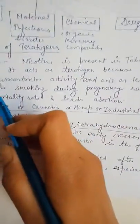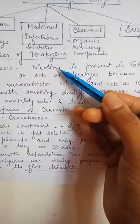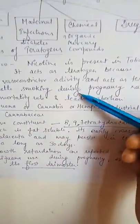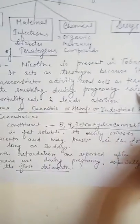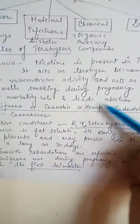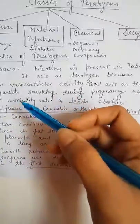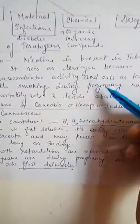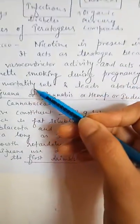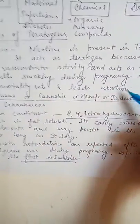Cigarettes contain tobacco in which nicotine is present. When we smoke cigarettes during pregnancy, it raises the mortality rate of the fetus and leads to abortion. Sometimes when we take cigarettes during pregnancy, the mortality rate increases and abortion may be required.